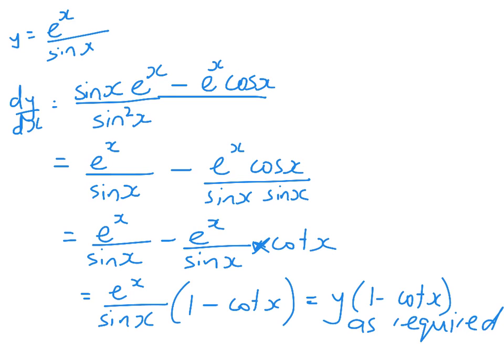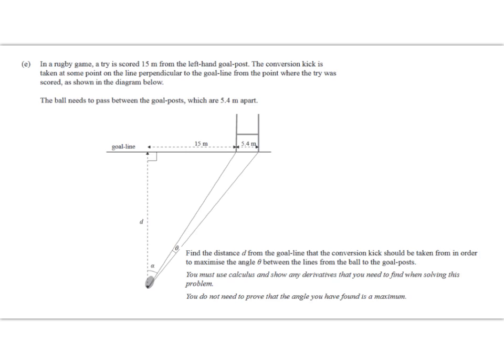All right, now on to the trickier question. That one was pretty straightforward. Okay, so there's a lot to read here. I hope you like rugby. In a rugby game, a try is scored 15 metres from the left-hand goalpost. The conversion kick is taken somewhere along the line, perpendicular to the goal line, from the point where the try was scored. So thank goodness they've given us a lovely diagram. The ball has to go between the goalposts. And the goalposts are 5.4 metres apart. So what we have to do is to figure out what is the optimal distance to make the angle between the lines from the ball to the goalposts as big as possible.